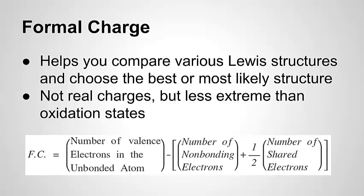Here's how you calculate formal charge. It's a very simple formula — a little bit of subtraction and addition. Formal charge is the number of valence electrons in the unbonded atom. So take the atom before you put it in the molecule — how many valence electrons does it have? From that, you're going to subtract the sum of the number of non-bonding electrons (the lone pair dots), plus half of the number of electrons that are shared — in other words, half of the number of electrons in bonds. And that's all you need for a formal charge.